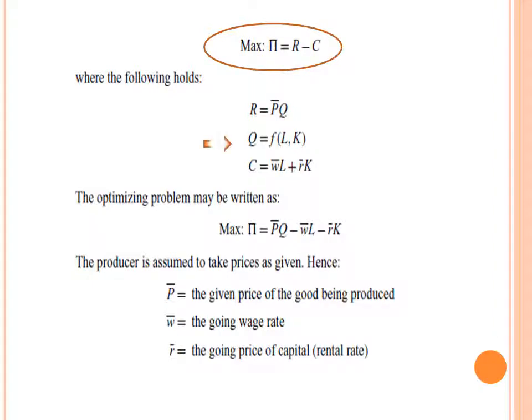In order to produce a given level of output, we need different combinations of labor and capital. We assume that the producer knows the technology that could be used and can choose the optimal combination of labor and capital. Another assumption is that the price of final goods and services is given, and the prices of inputs — wages or rent — are also given.